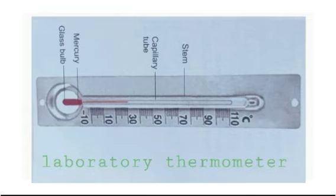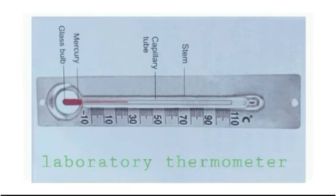This figure shows a common thermometer used in laboratories — it is called the Celsius thermometer. It has a very fine glass tube with a very small bore called a capillary tube. The capillary tube is protected by a thick glass tube called the stem. The markings are made on the stem from minus 10 degree centigrade to 110 degree centigrade.